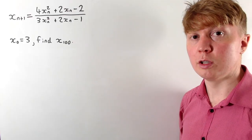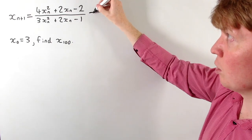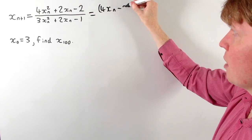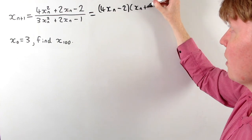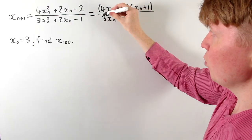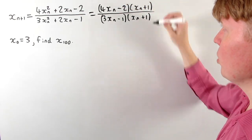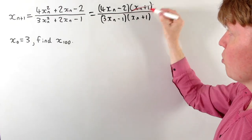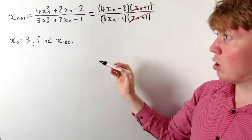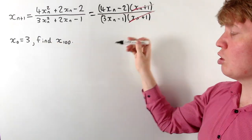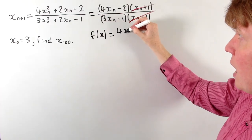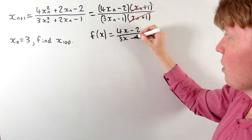The first thing we can notice is that the two quadratics can actually be factorised. Factorising the numerator gives 4x_n minus 2 times x_n plus 1, and the denominator factorises as 3x_n minus 1, again multiplied by x_n plus 1. The x_n plus 1 factors cancel, giving us a simpler function: f(x) = (4x − 2) / (3x − 1).